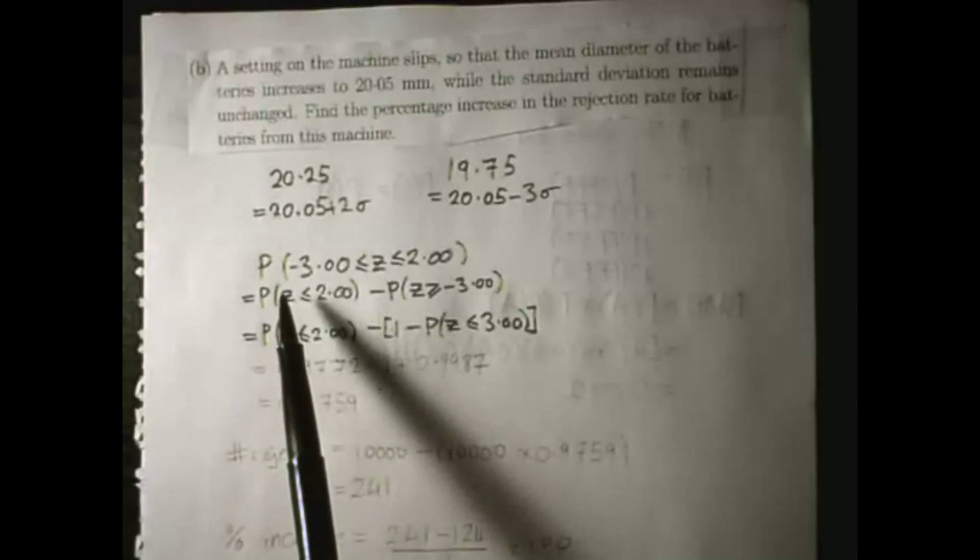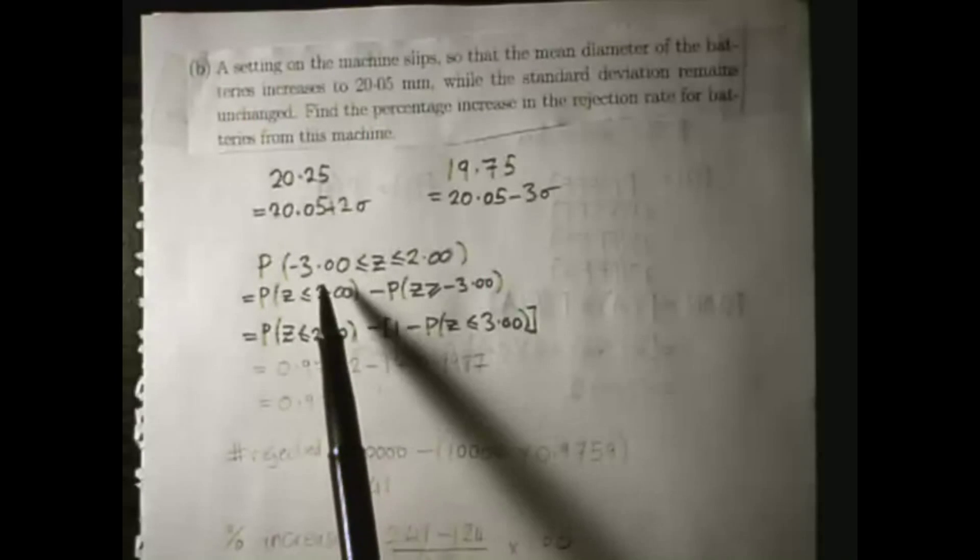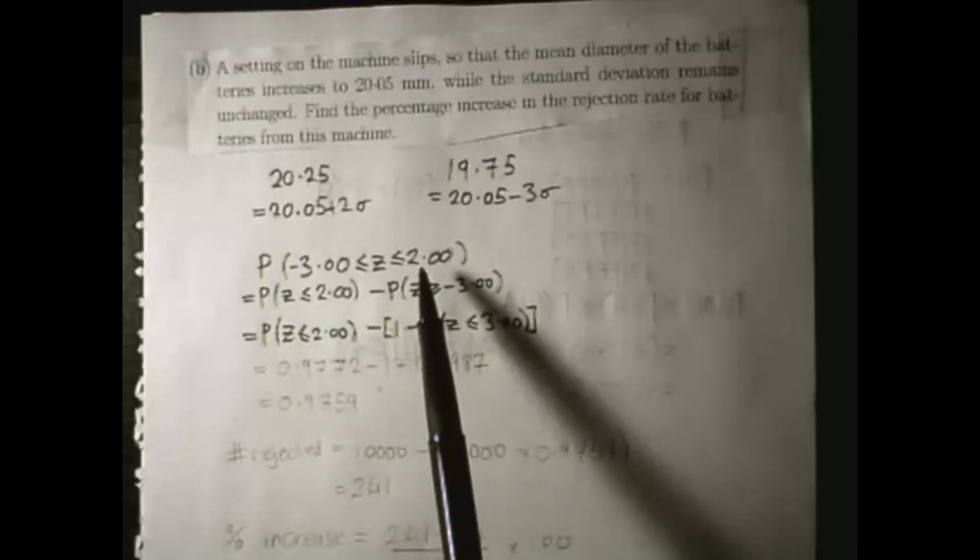we're looking for the probability that the diameter of the battery is between minus 3 standard deviations from the mean and plus 2 standard deviations from the mean.